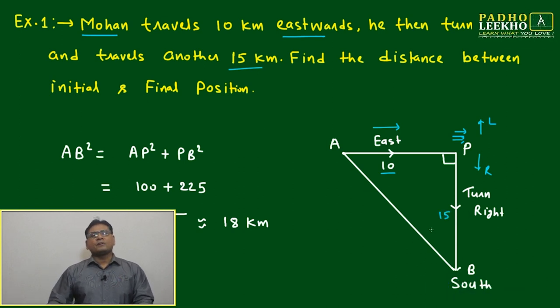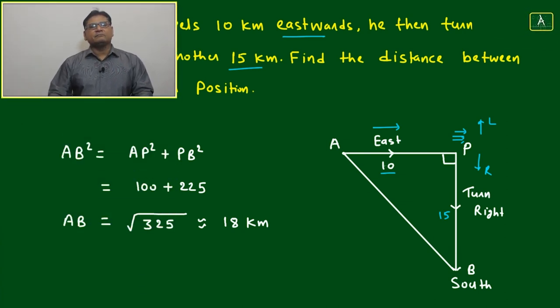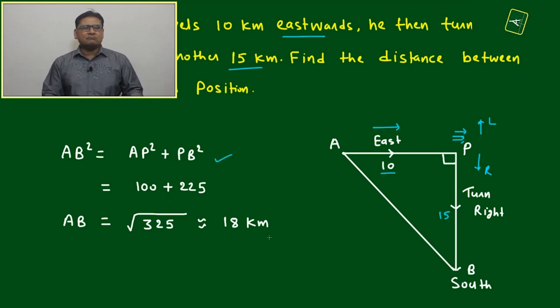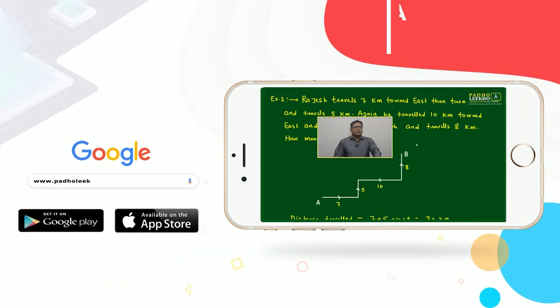You have to find AB of this right angle triangle APB. AB² equals AP² plus PB². Both of the data is given. It's just simple, 18 kilometers approximately.